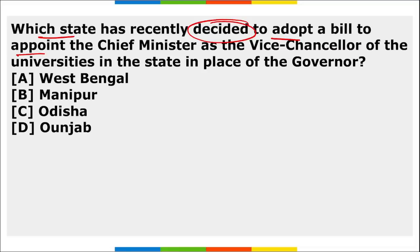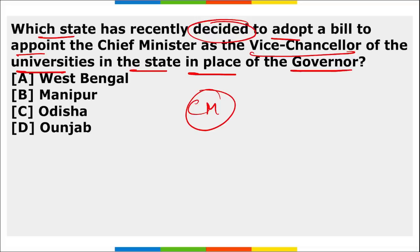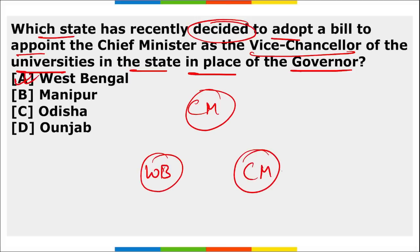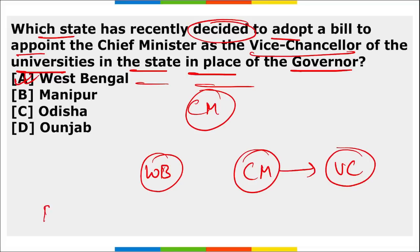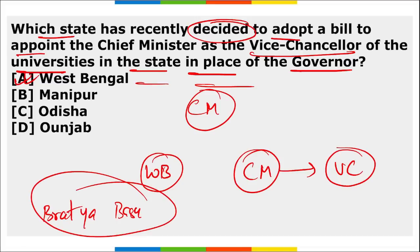West Bengal has recently decided to adopt a bill to appoint the Chief Minister as the Vice Chancellor of universities in the state, replacing the Governor. State Education Minister Bratya Basu announced that the state cabinet unanimously decided to appoint Chief Minister Mamata Banerjee as Chancellor of all state-run universities on 26th May.